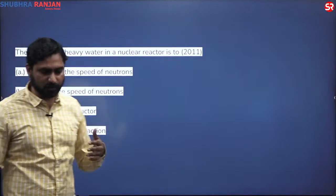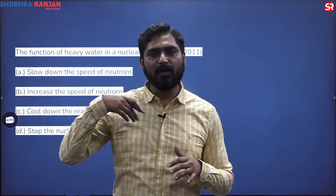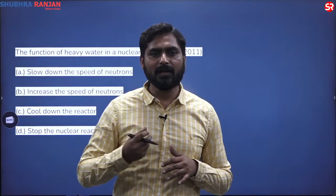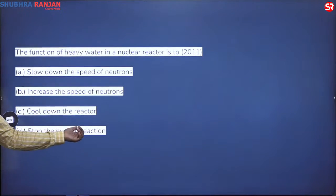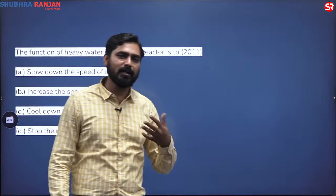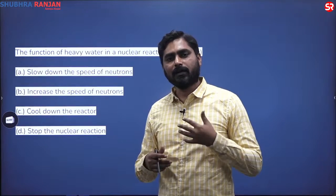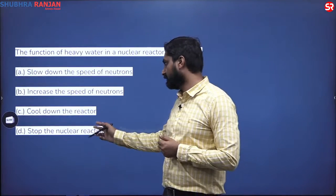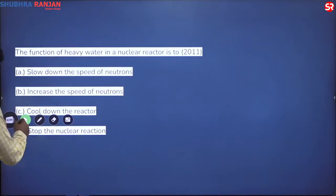The purpose of heavy water is to extract heat from the core and pass it to the steam generator, where heat is converted into steam to produce electricity. The fourth option, 'stop the nuclear reaction,' also cannot be done by heavy water alone — you need control rods made of cadmium, hafnium, or boron. So the correct answer is the first statement: to slow down the speed of neutrons.